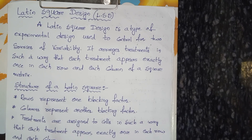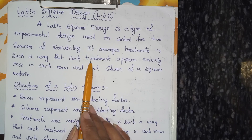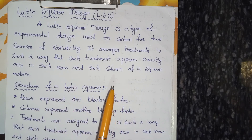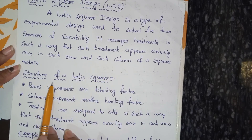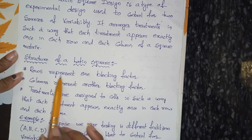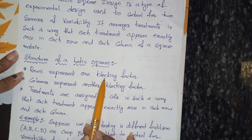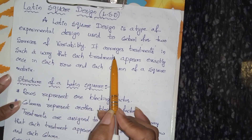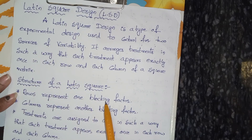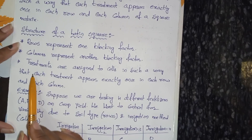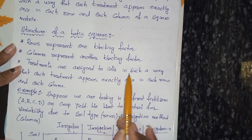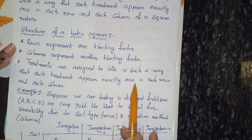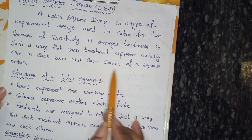It arranges treatments in such a way that each treatment appears exactly once in each row and each column of the square matrix. Rows represent one blocking factor and columns represent another blocking factor — so two factors. Treatments are assigned to cells such that each treatment appears exactly once in each row and each column.